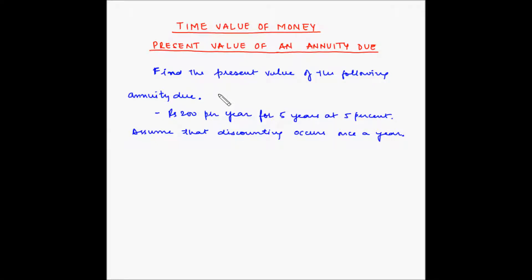Welcome to another example of time value of money. In this example we'll look at multiple methods of finding out the present value of an annuity due. Let us first recall what is an annuity due. An annuity is a series of equal payments made at fixed intervals for a specified number of periods. If these payments are made at the beginning of each period, then the annuity is an annuity due.